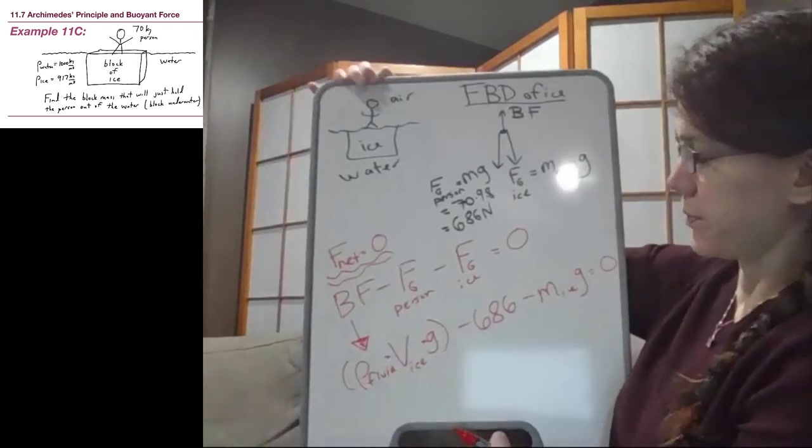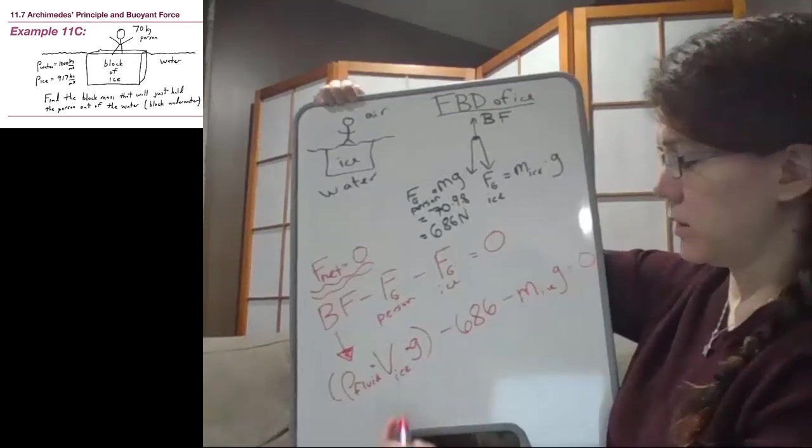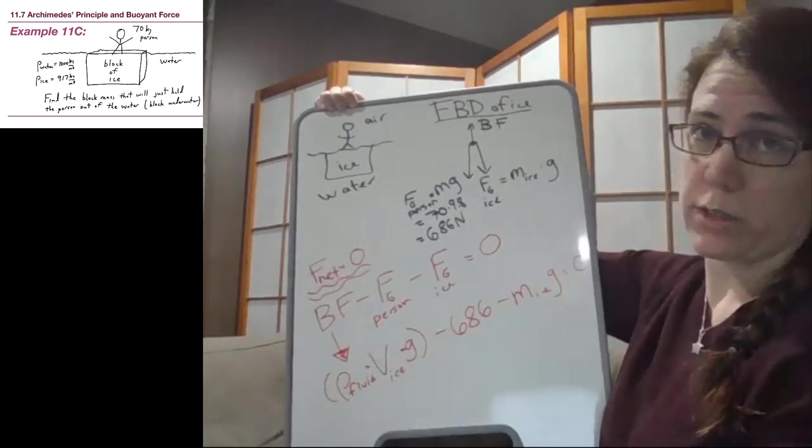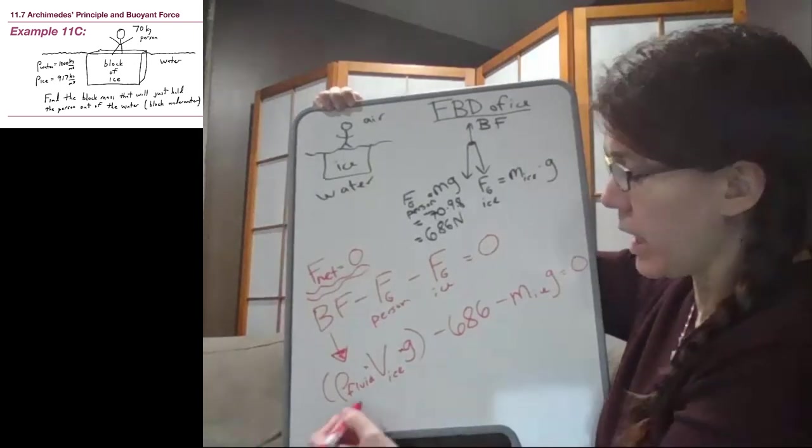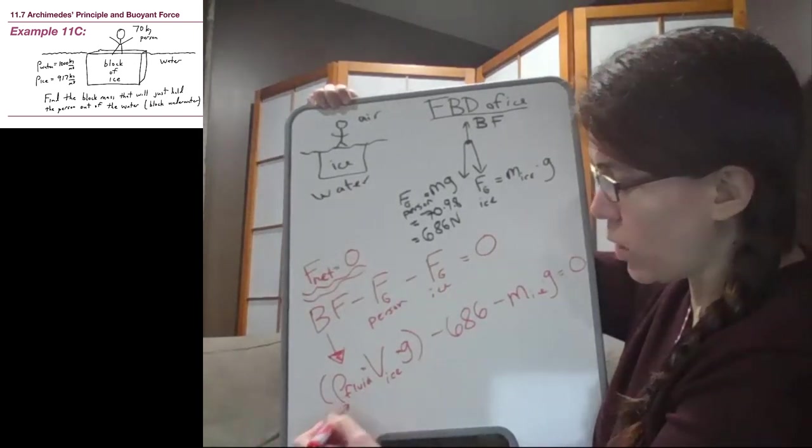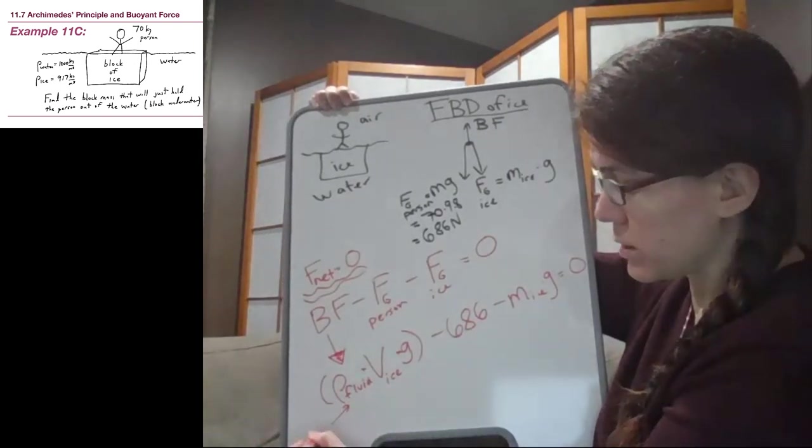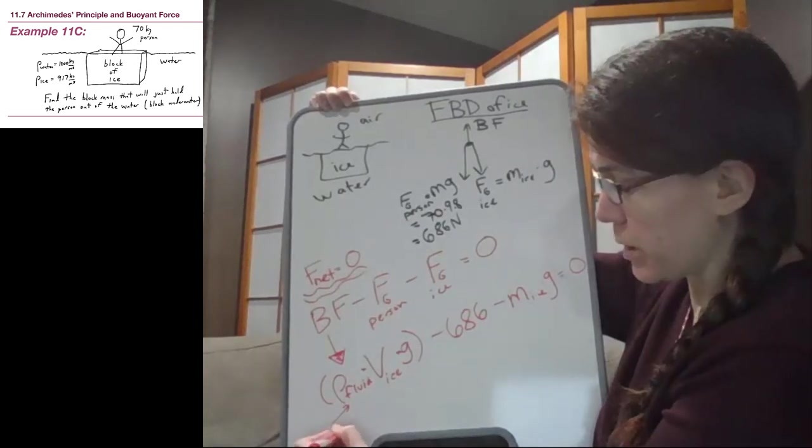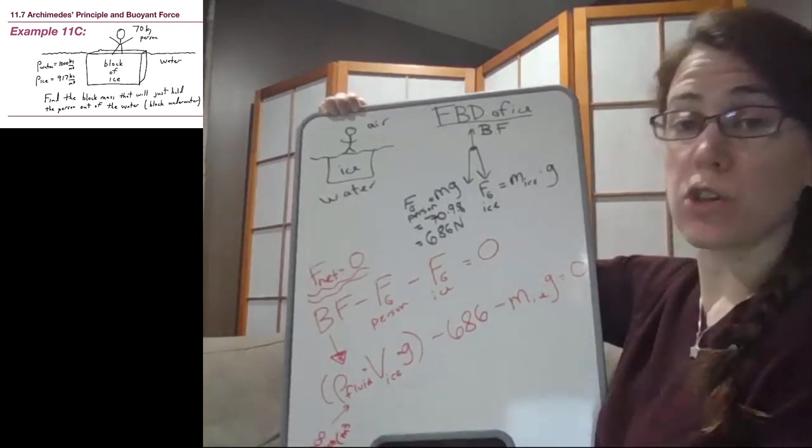Okay, so if we look at this, first of all, g is a known quantity, 9.8, and the mass of the fluid here, that's water, so that's a thousand kilograms per cubic meter. So that's known also.